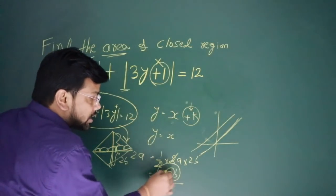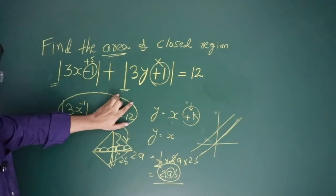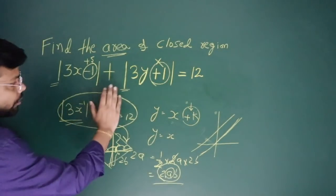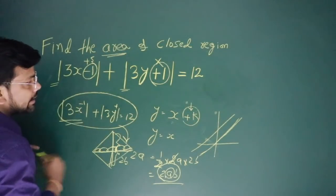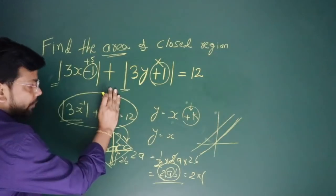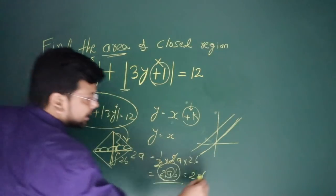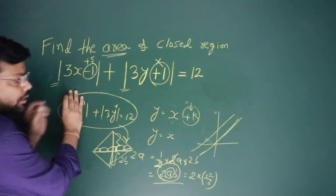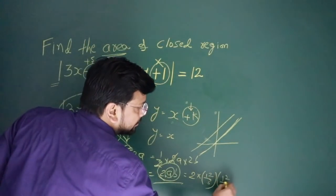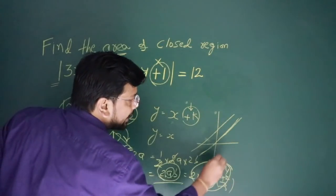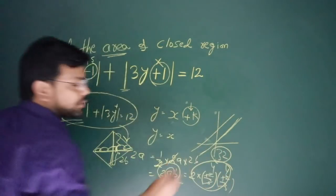Now what is a and what is b? a is the value when we do not have y. b is the value when we do not have x. If we do not have y, y is 0, so x is 12/3 = 4. If x is 0, y is 12/3 = 4. Total area is 2 × 4 × 4 = 32. The answer to this question is 32.